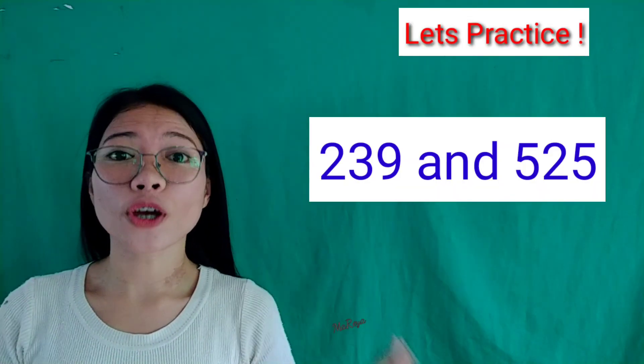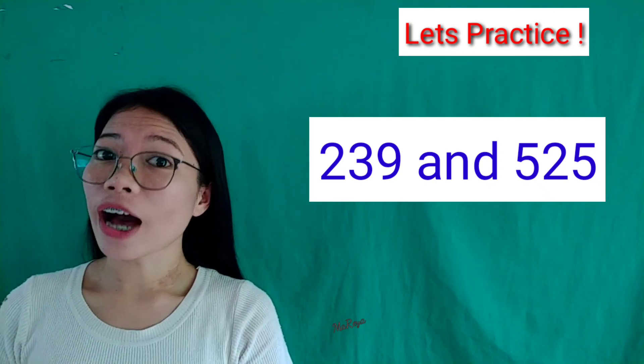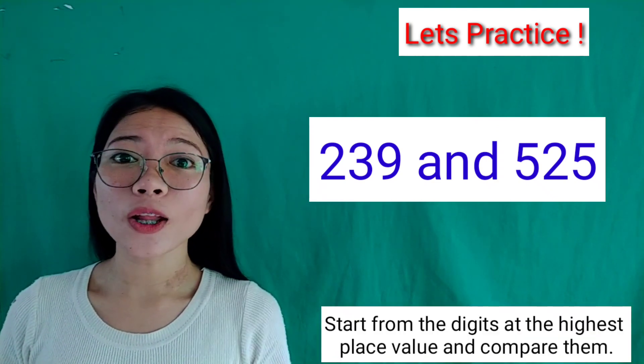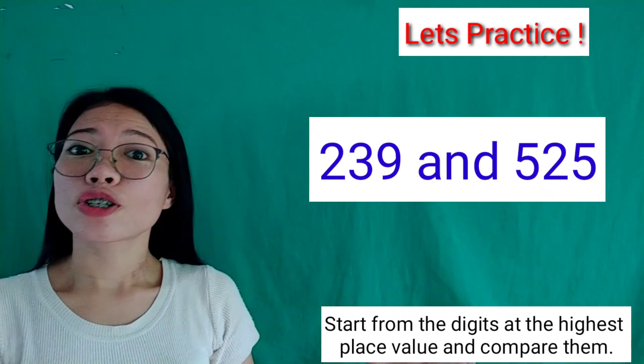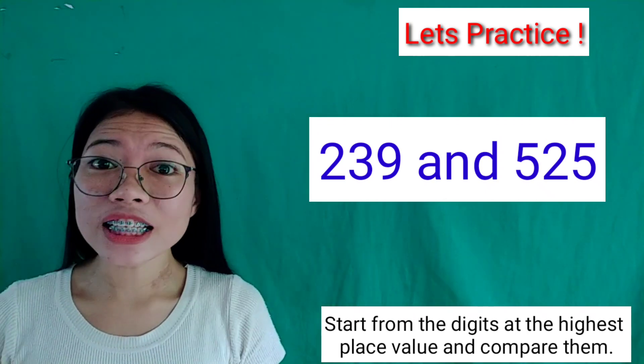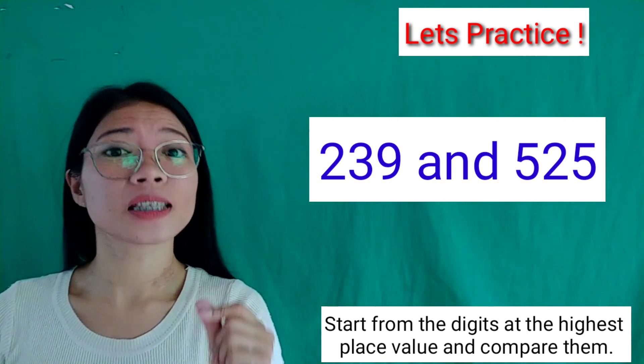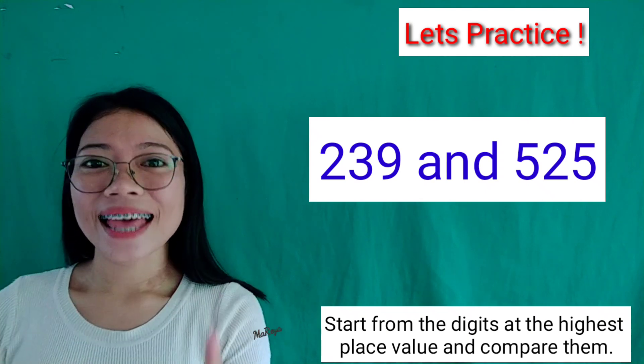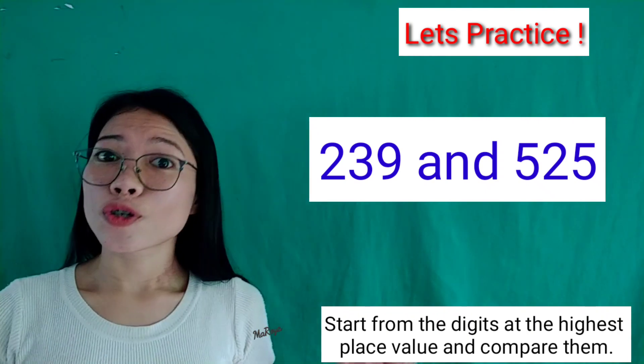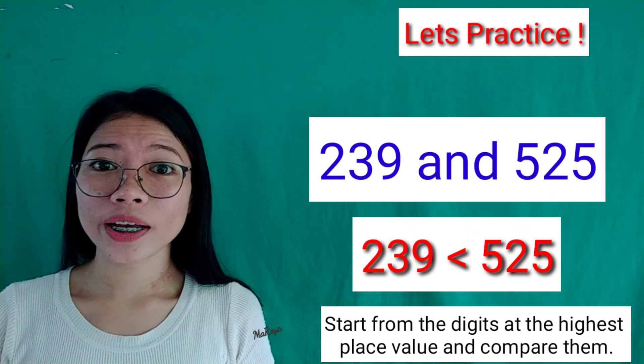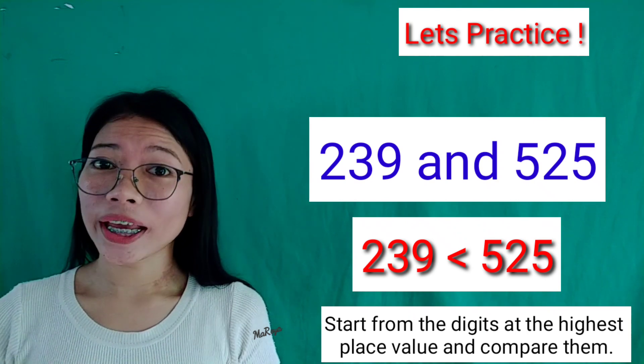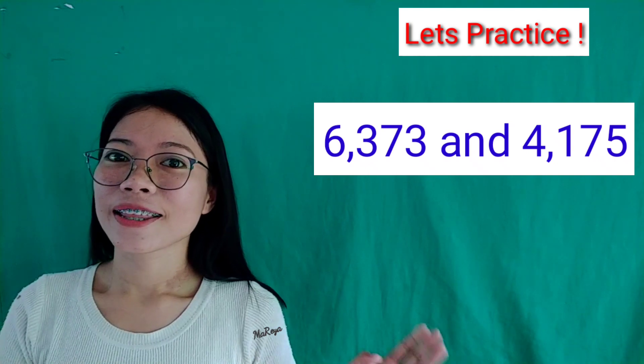Let's try the following example: 239 and 525. Let us follow the steps. Let's compare first the digits with the highest place value, 2 and 5. And 2 is less than 5. So, 239 is less than 525.